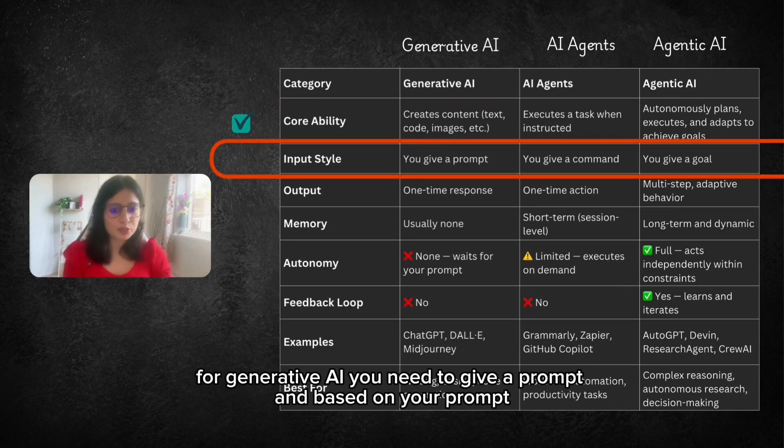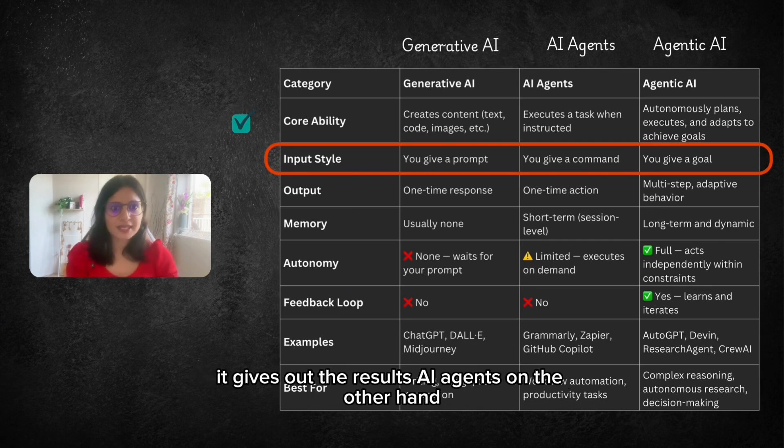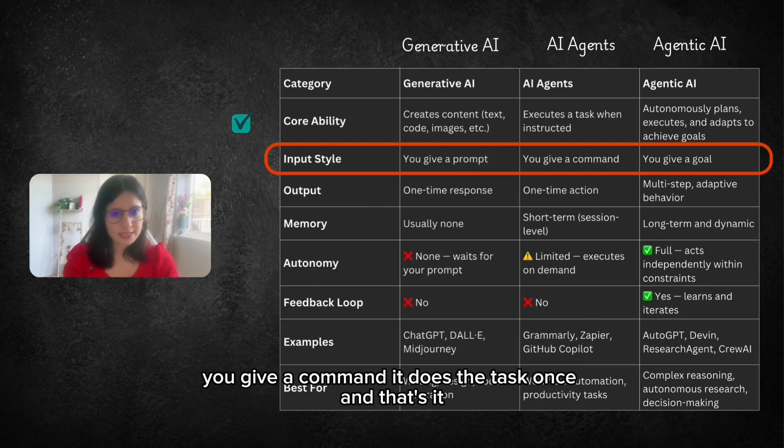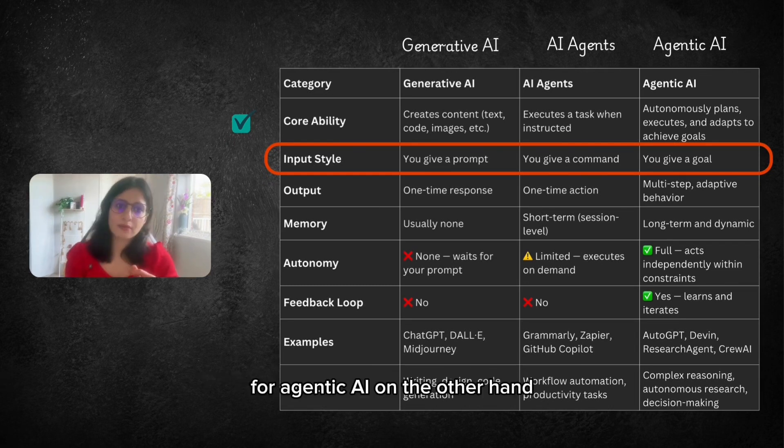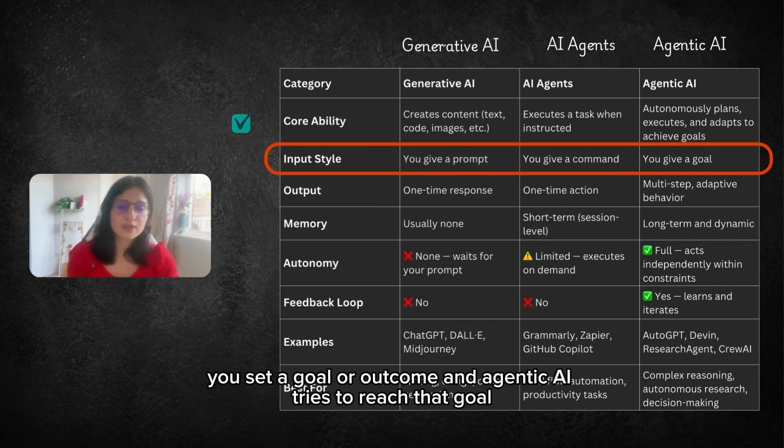For Generative AI you need to give a prompt and based on your prompt it gives out the results. AI Agents on the other hand you give a command, it does the task once and that's it. For Agentic AI on the other hand you set a goal or outcome. An Agentic AI tries to reach that goal.